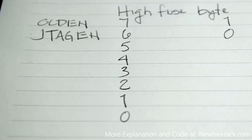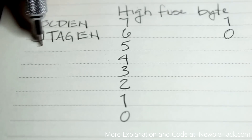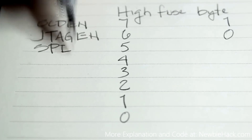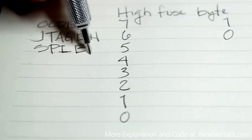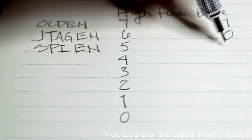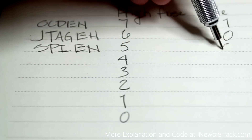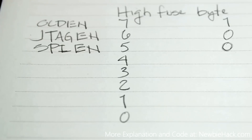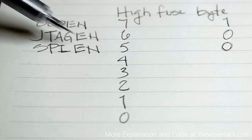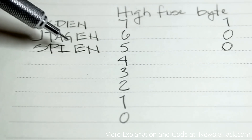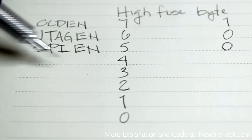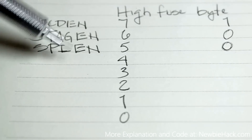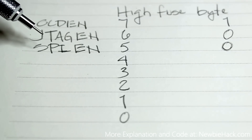The next one is SPIEN — SPI enable. SPI you should already know about because we use that every time we program the microcontroller. We want to definitely keep this at a zero because we want to be able to program. This is the interface that uses the MISO (Master In Slave Out) and MOSI (Master Out Slave In) pins to program the microcontroller.